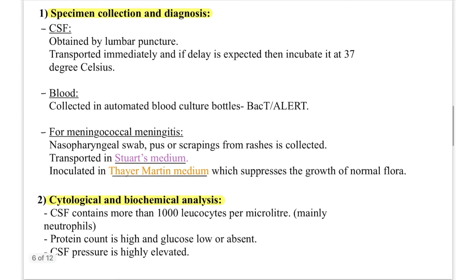Specimen collection: CSF is obtained by lumbar puncture, transported immediately, and if any delay is expected, incubated at 37°C. Blood is collected in automated blood culture bottles (BacT/Alert). For meningococcal meningitis specifically, scrapings of purpuric rashes, nasopharyngeal swab, or pus can be taken — transported in Stuart's medium and inoculated on Thayer-Martin medium, which suppresses growth of normal flora.